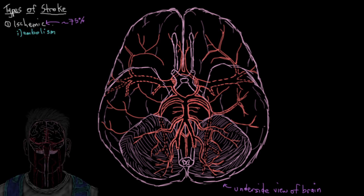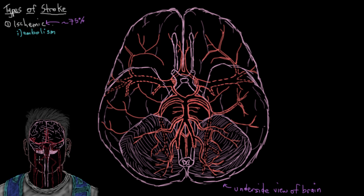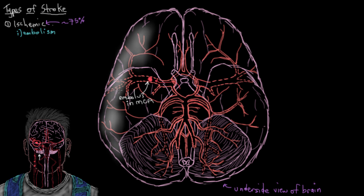We're looking at the underside of the brain. An embolism is some type of traveling mass in your bloodstream, and it's most often a little blood clot. In an embolic stroke, this little blood clot will travel up to one of your cerebral arteries, get stuck, and cut off blood circulation to that area. Let's say it gets stuck somewhere here — it's traveled up through the internal carotid artery and is lodged in the middle cerebral artery. Now parts of the brain served by that MCA, that middle cerebral artery, are all going to start to die off.